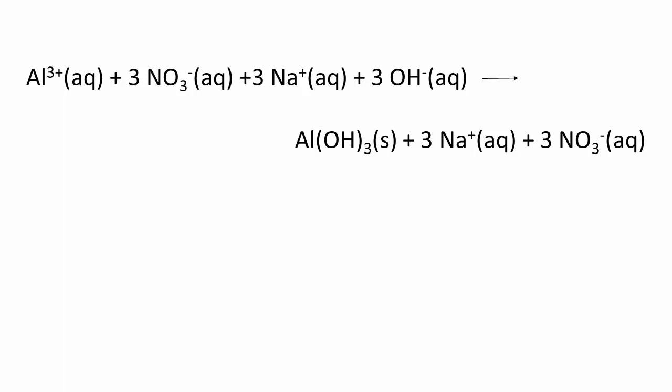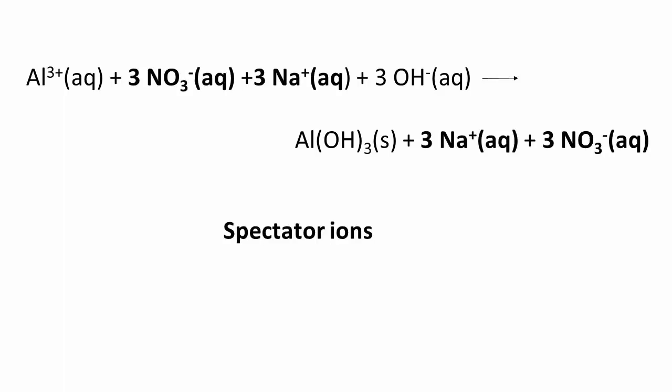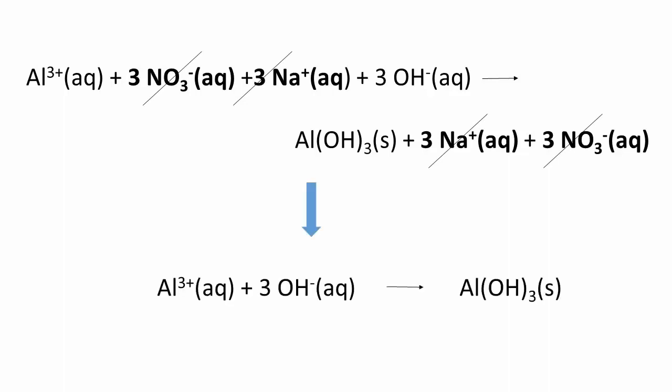Though more accurate in representing what is really occurring, we note that some ions simply do nothing and appear as both reactant and product. We call these spectator ions. If we eliminate the spectator ions, we finish with the net ionic equation, the simplest way of representing the precipitation reaction that may occur when two solutions of different electrolytes are mixed together.